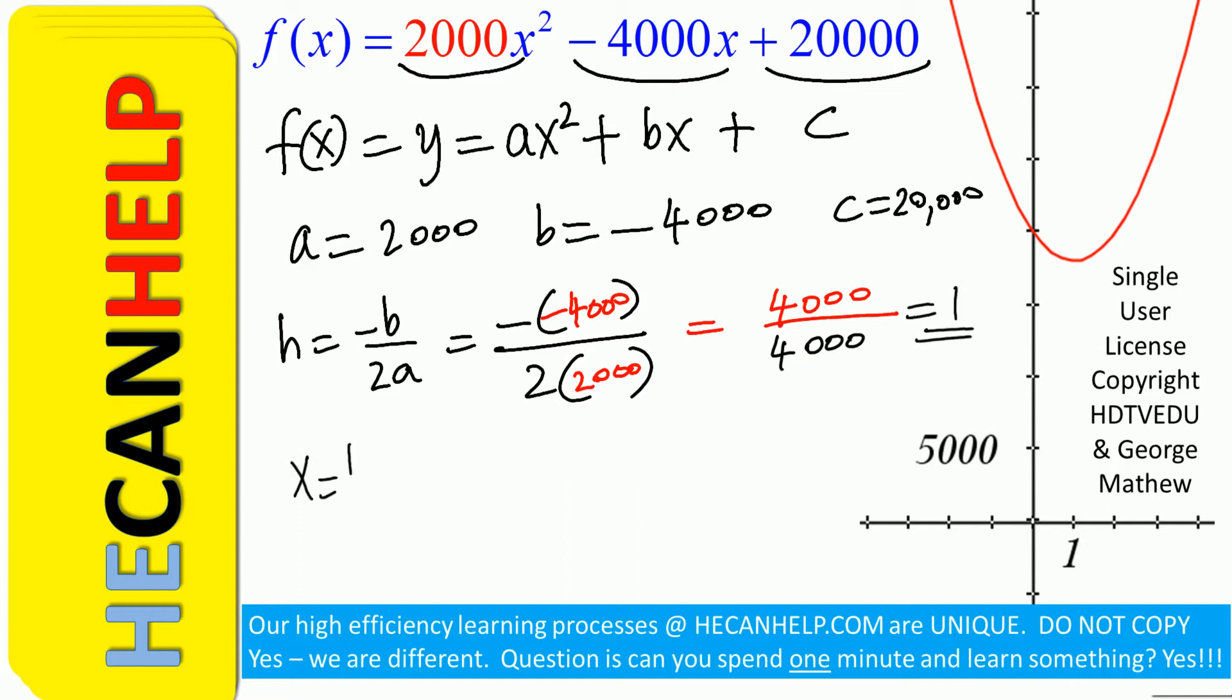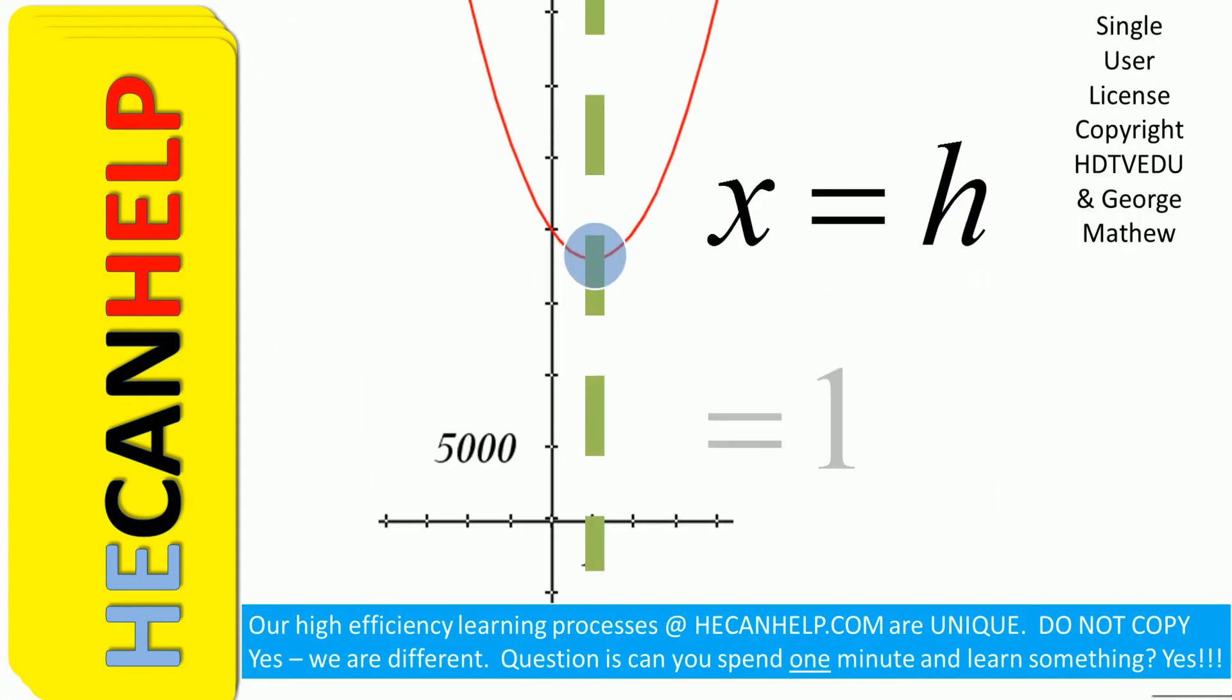So x equals h equals 1 and that is our axis of symmetry. Here is our x equals 1. If you draw a vertical line at x equals h equals 1, that's what we have drawn here. That is your axis of symmetry.